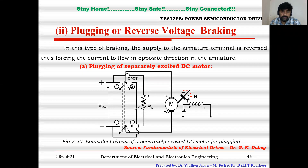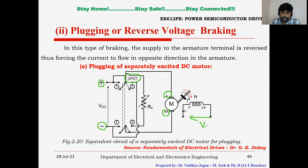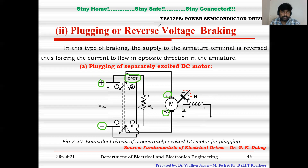You can see the equivalent circuit of a separately excited DC motor during plugging. The armature consists of terminal A, which is connected to the VDC through the DPST switch. The field is connected to a separate DC source, V2. Since V2 is constant for a fixed field resistance, the field current will be constant and therefore field flux is also constant. We are not discussing the field part further as it provides a constant field current due to the constant field voltage.